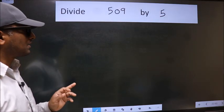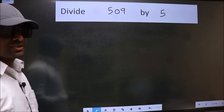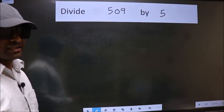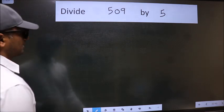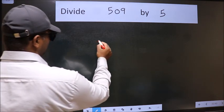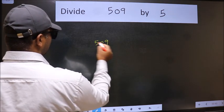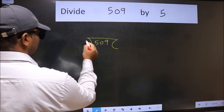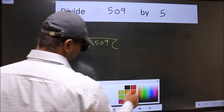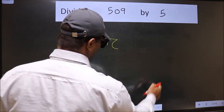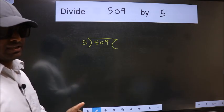Divide 509 by 5. To do this division, we should frame it in this way: 509 and 5 here. This is your step 1.